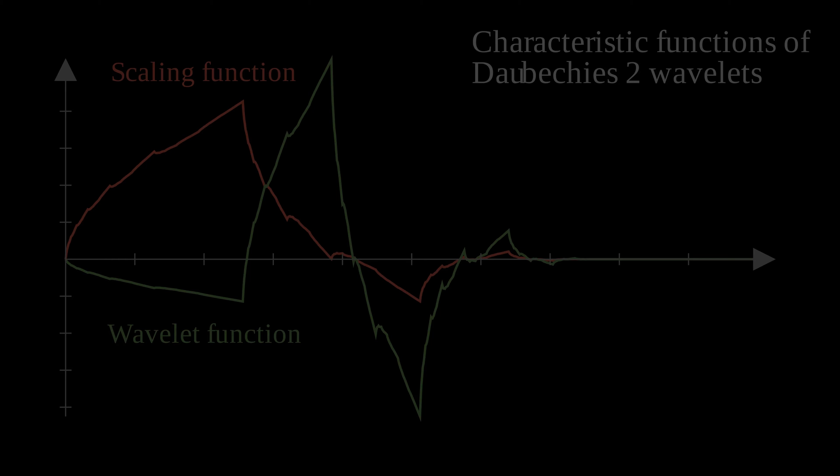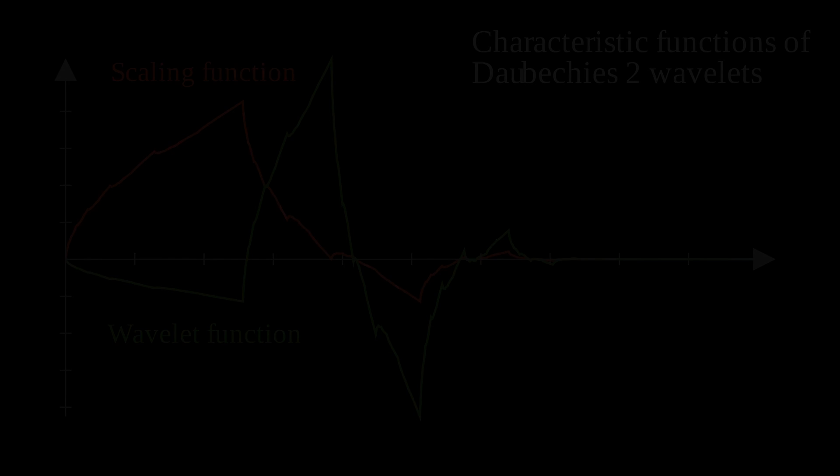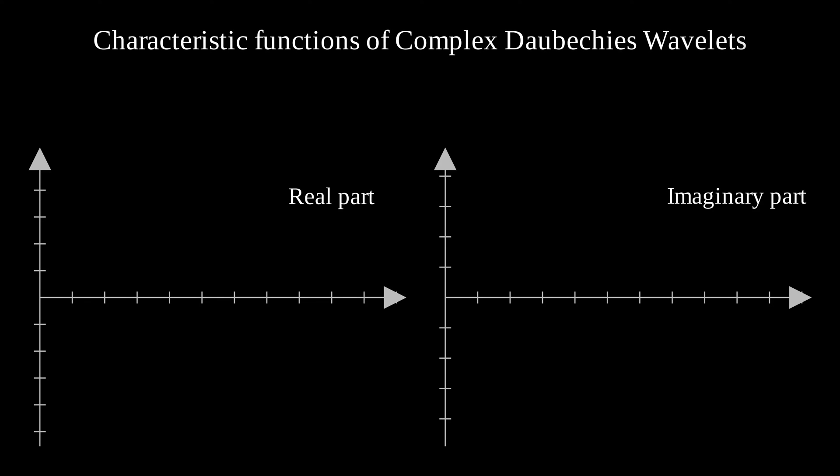Fortunately, some complex wavelet families already exist, even if they are not used a lot. The wavelets we are going to use are named complex Daubechies wavelets. And they are based on a scientific paper released in 1993 by Jean-Marc Lina and Michel Mayrand.